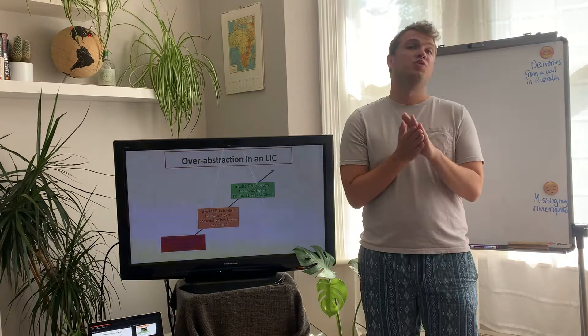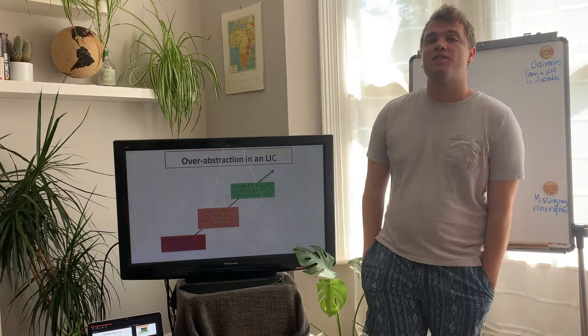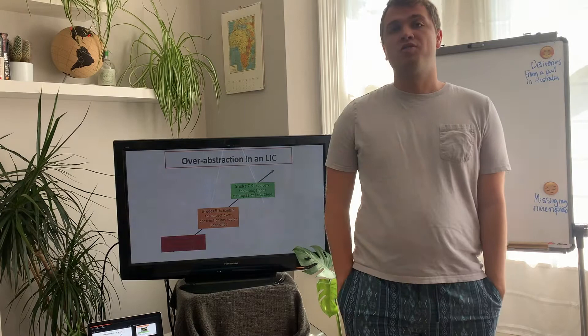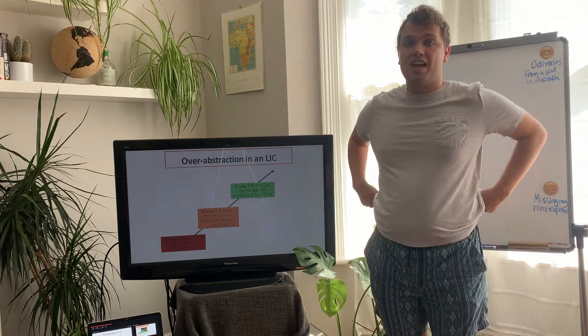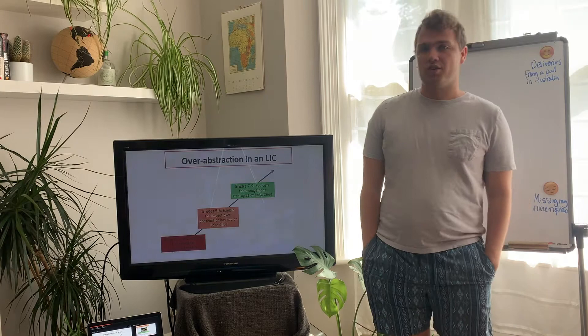So the last two lessons in this topic, we are having a look at an example of something called over-abstraction. We're going to be having a look at how over-abstraction of water has an impact in a low-income country. So the title in your books today is 'Over-abstraction in an LIC.' Please write that in your books and underline it with a ruler.